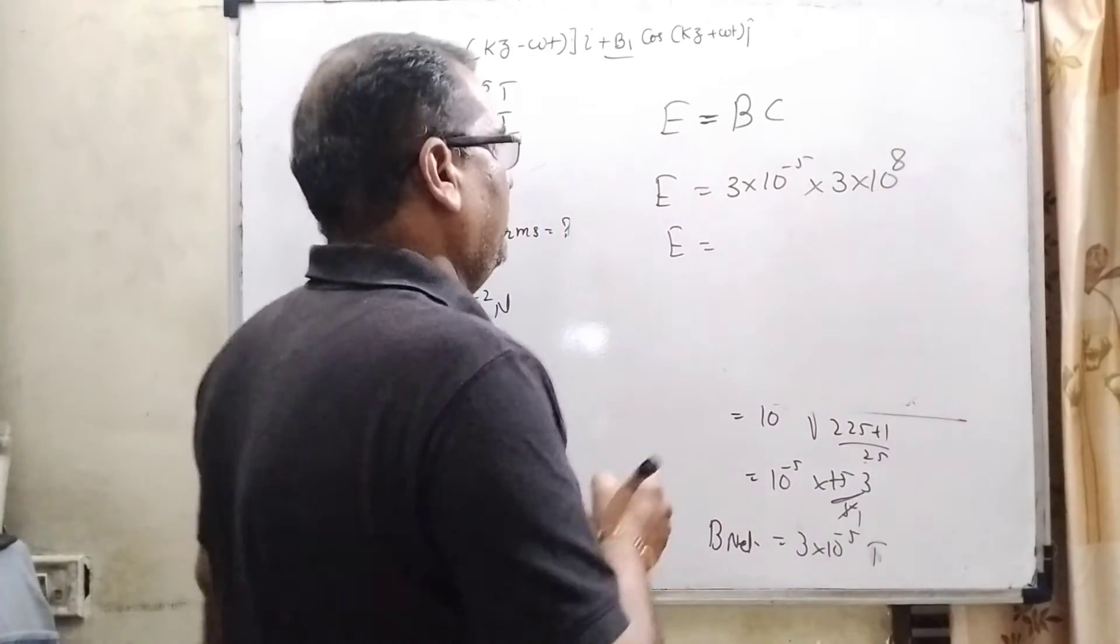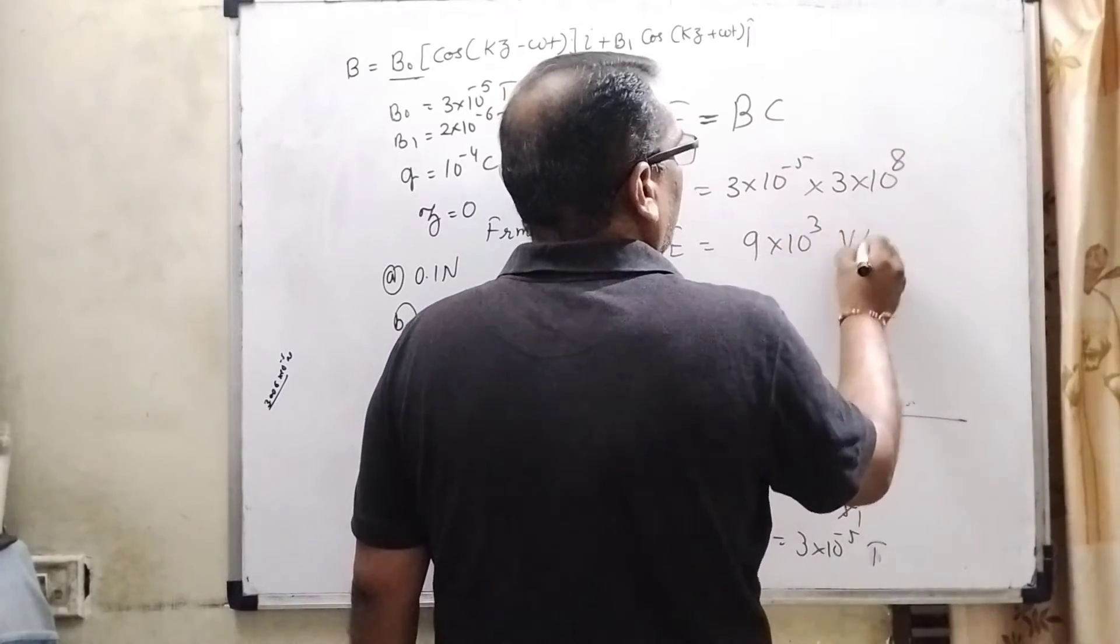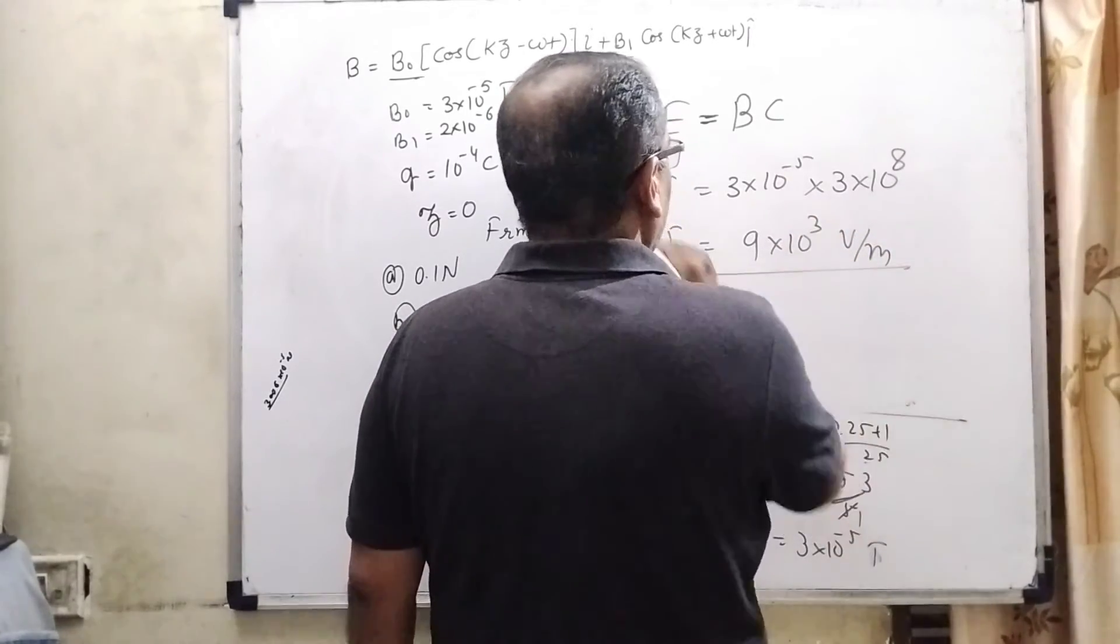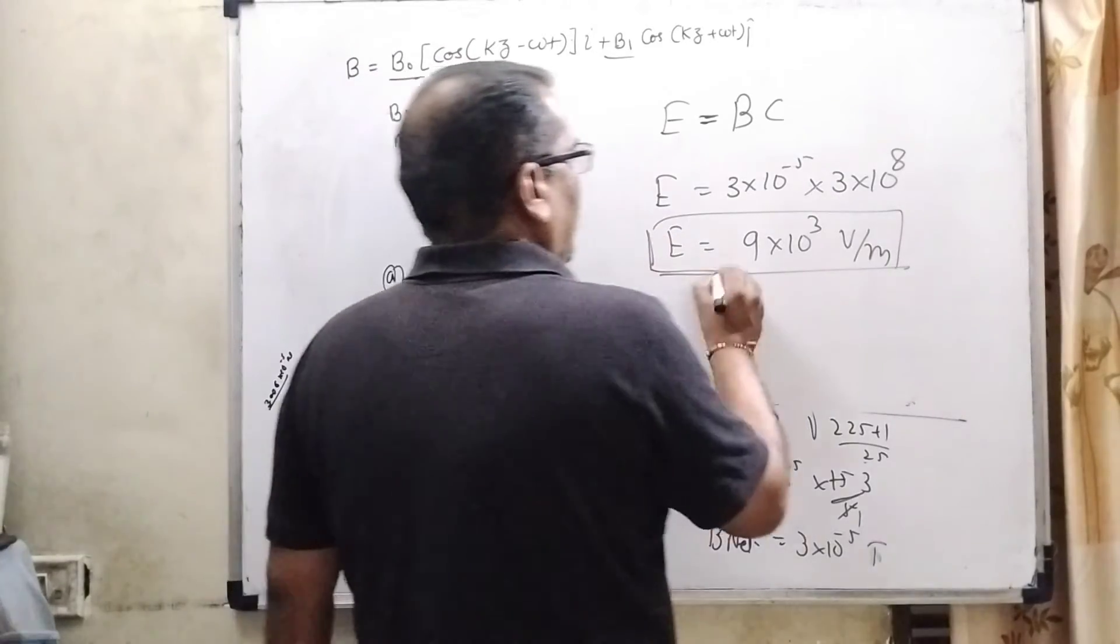So, multiply 3 into 3, that is 9 into 10 to the power 3 volts per meter. So here you get the electric field.